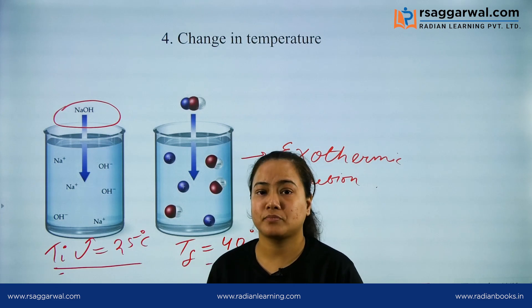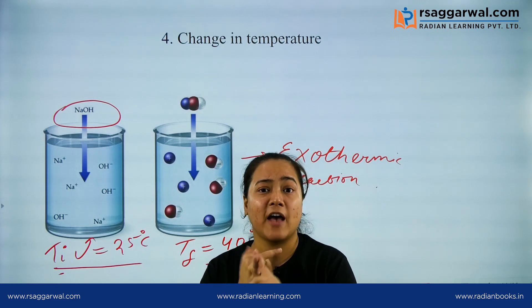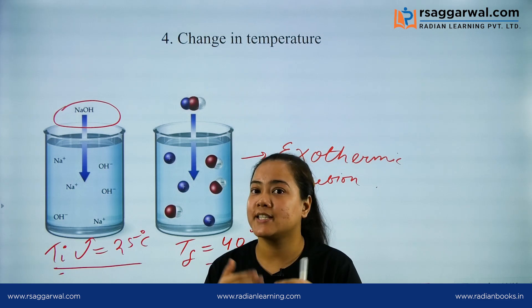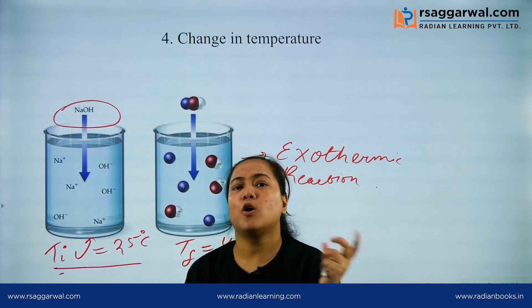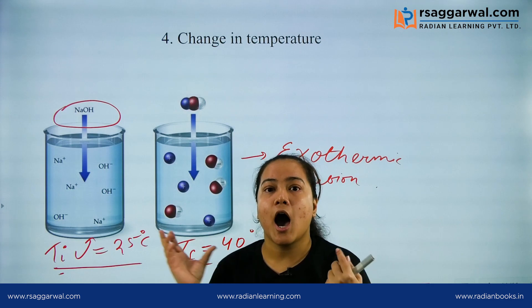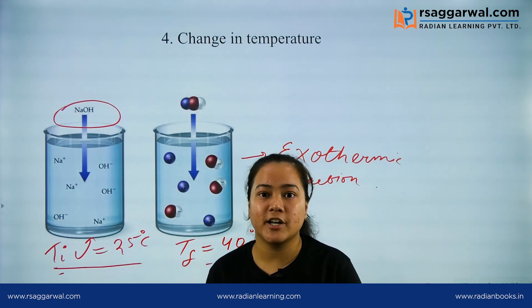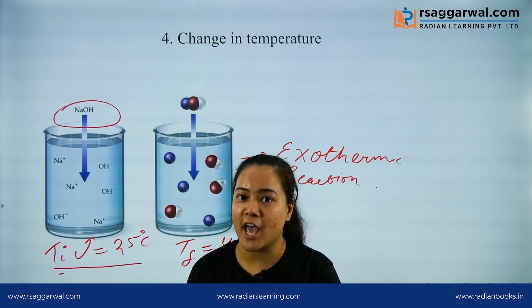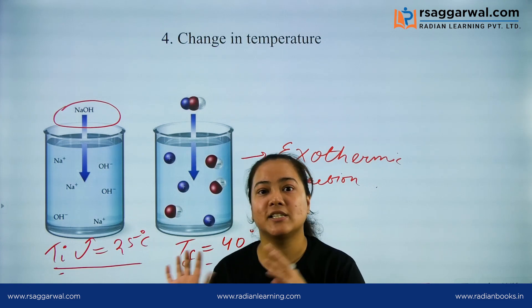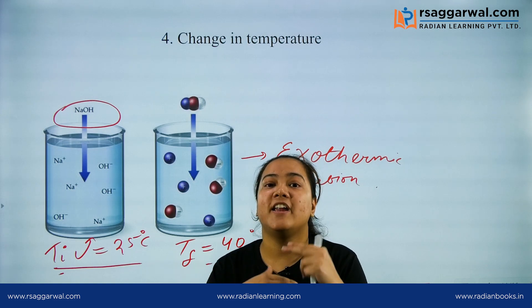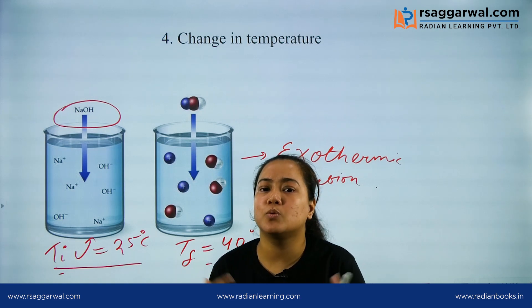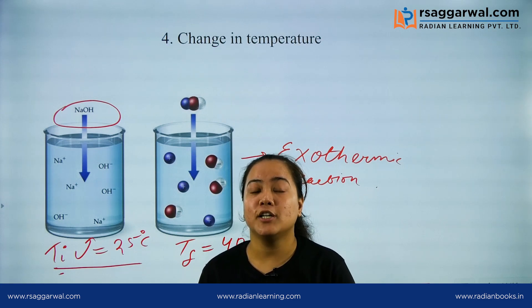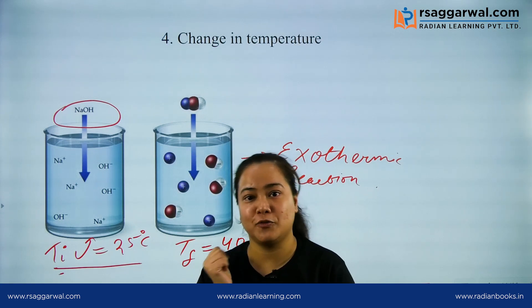So what we have done till now is we have seen what a chemical reaction is and what are various examples of chemical reactions. We have also seen how to decide whether a reaction is a chemical reaction or not by judging based on the characteristics of a chemical reaction. In our next lecture, we'll further discuss what is a chemical equation and how to balance it. Thank you very much and this is it for today's video.